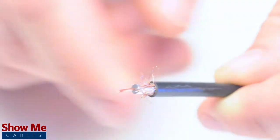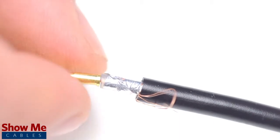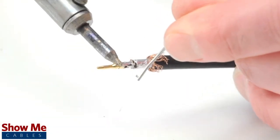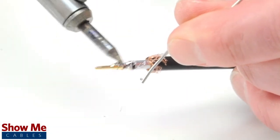Pull back the braided shield and insert the pin onto the center conductor. Solder the pin onto the center conductor and insert the connector housing over the cable.